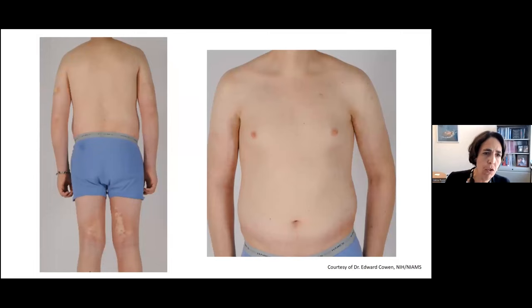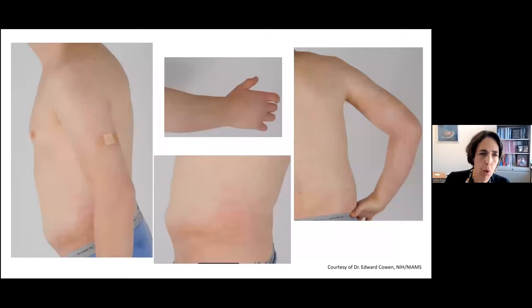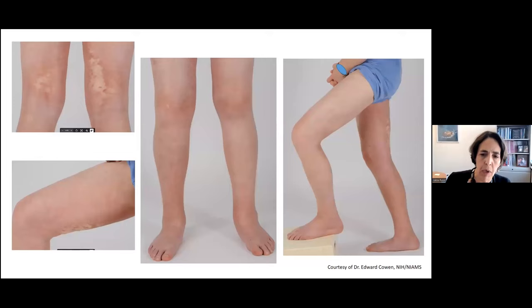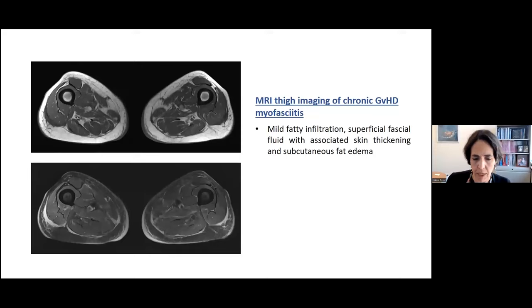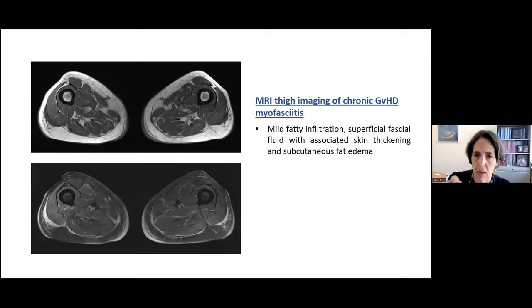He then developed further muscle cramps with myalgias, evidence of myositis, arthralgias, joint swelling, and proximal muscle weakness. CK and aldolase were elevated. All autoantibodies tested were negative; ESR and rheumatoid factor were normal; no evidence of avascular necrosis or infection. Photographs show this young, naturally slim man now with overwhelming generalized edema involving all of his body, most prominent on the extremities, with some sclerodermatous changes around the waistline.